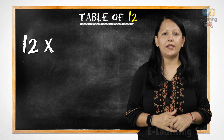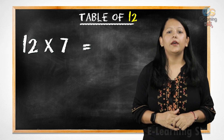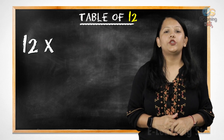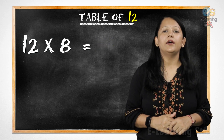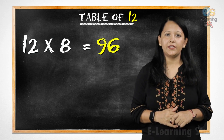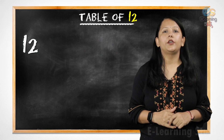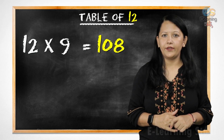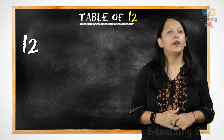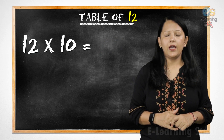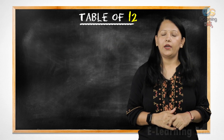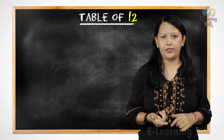12 sevens are 84, 12 eights are 96, 12 nines are 108, 12 tens are 120. Let's revise it.